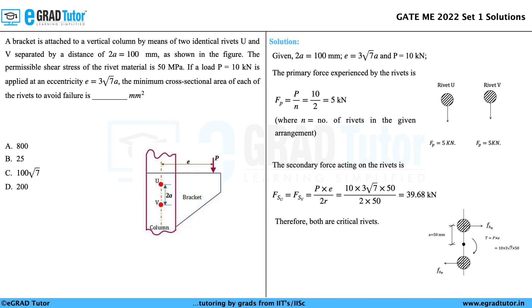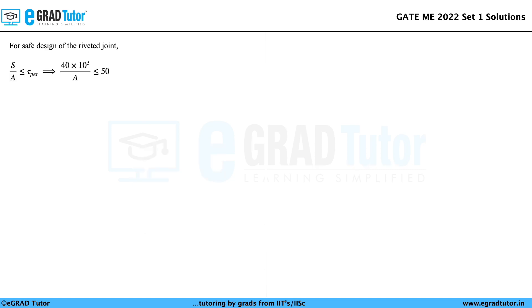We need to find the maximum shear force, which is the resultant of the primary and secondary forces. The shear force turns out to be 40 kN. For safe design of the riveted joint, the shear stress should be less than or equal to the permissible stress: (40 × 10³)/A ≤ 50 MPa. Upon simplification, we get the cross-sectional area as 800 mm².